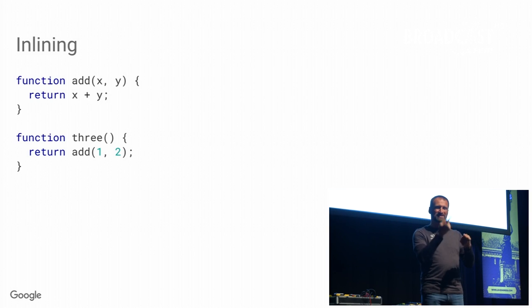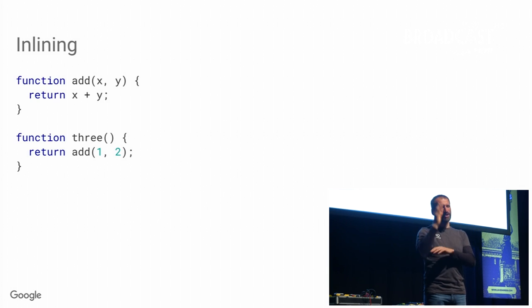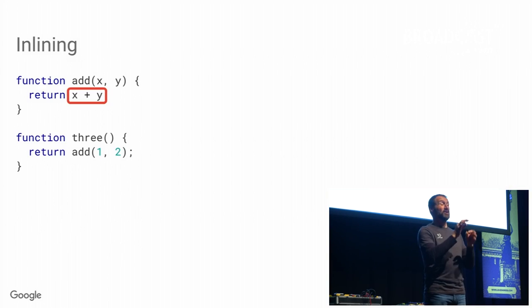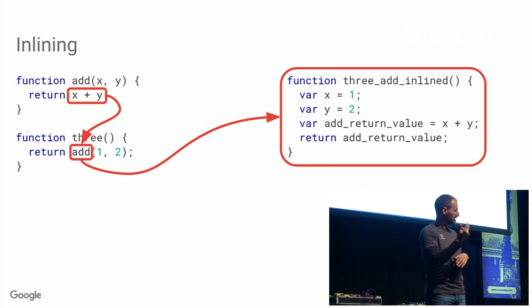Here I'm assuming that 'add' is only called on integers, because plus can also mean string concatenation — but let's focus on integers here. This is a good example for inlining because what is the point of calling out to 'add' when you can just do the operation inline? On a high level, inlining 'add' into 'three' means you take the body of the function 'add' and you inline it at the call site in the function 'three', and you end up with something that looks like this.